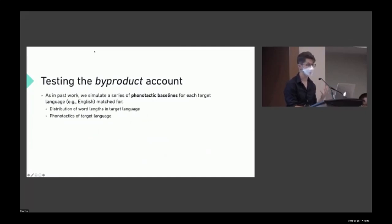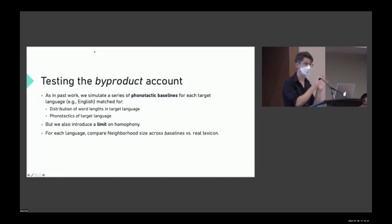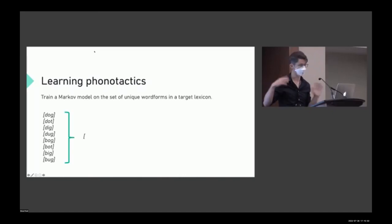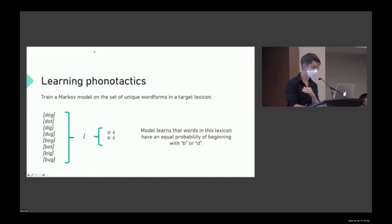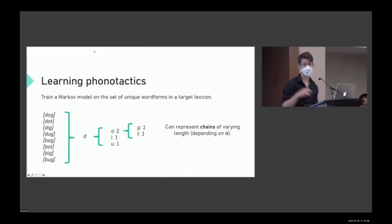To test this account, we simulated a series of phonotactic baselines for each target language, matched for the distribution of word lengths and phonotactics of the target language. In several baselines we also introduced a limit on homophony, and then compared neighborhood sizes across baselines and the real lexicon. To learn phonotactics, we train a Markov model on the set of unique word forms in a target lexicon. In a simple lexicon, words can start with D or B with equal probability; after D, the next most likely sound is O; and you can represent longer-term dependencies depending on the chain length. We parameterize this N-phone model for each language using a cross-validation procedure.